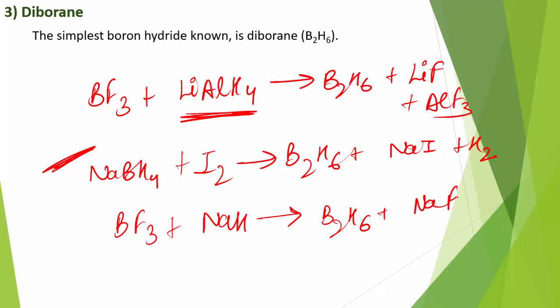For industrial-scale production: 2BF₃ + 6NaH → B₂H₆ + 6NaF. Diborane is a colorless, highly toxic gas with a boiling point of 180 K. It catches fire spontaneously upon exposure to air and burns in oxygen releasing a large amount of energy: −1976 kJ/mol. Most higher boranes are also spontaneously flammable in air.